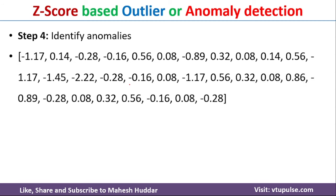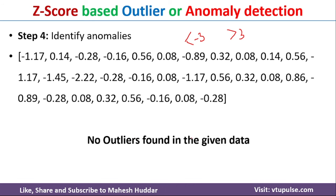In this example, we have already calculated the Z-scores. None of them are less than −3 or greater than +3. This shows that the given dataset does not have any anomalies or outliers. If any value had been less than −3 or greater than +3, it would have been flagged as an anomaly, but in this case none are present, so the dataset is clean.